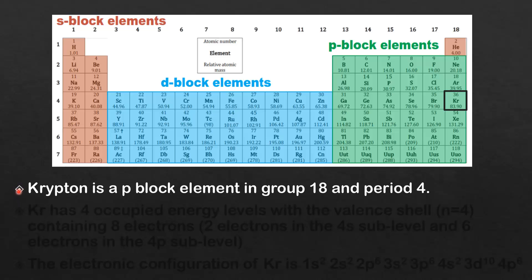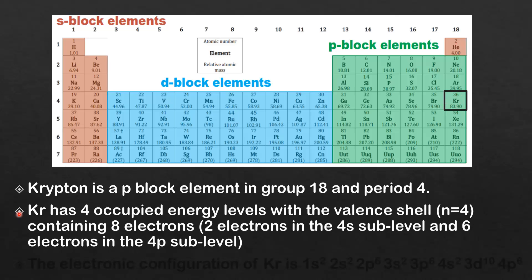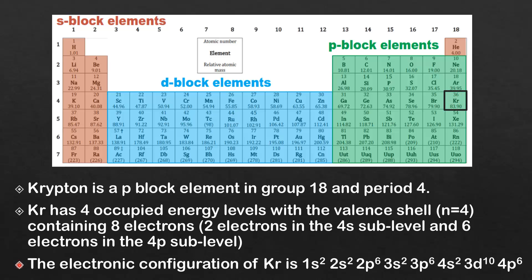Our final example is krypton. Krypton is a P block element in group 18 and period 4. It has 4 occupied energy levels with the valence shell N=4 containing 8 electrons: 2 electrons in the 4S sublevel and 6 electrons in the 4P sublevel. The electronic configuration of krypton is 1S2, 2S2, 2P6, 3S2, 3P6, 4S2, 3D10, and 4P6.